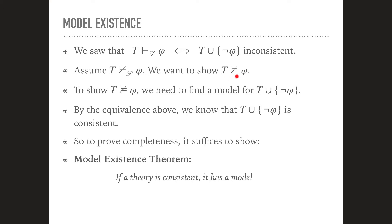So we want to show that T then does not logically imply φ. To show this, we need to find a model for this set or this theory here, T union not φ, right? Because if we can find a model for this, then that means that this logical implication does not hold. By the equivalence above, we know that T union not φ is consistent, because we assume that T does not prove φ.